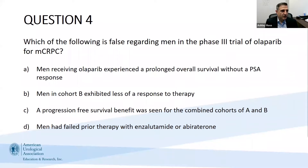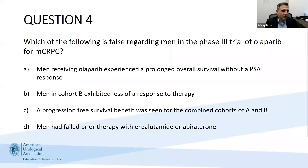The final question: Which of the following is false regarding men in the Phase III trial of Rucaparib for metastatic castrate-resistant prostate cancer? A, men receiving Rucaparib experienced a prolonged overall survival without a PSA response; B, men in cohort B exhibited less response to therapy; C, a progression-free survival benefit was seen for the combined cohorts A and B; or D, men had failed prior therapy with enzalutamide or abiraterone.